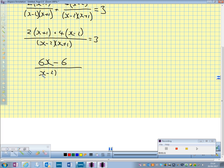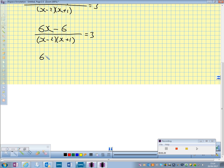x minus 2, x plus 1 equals 3. Next step is to multiply through by our bottom line. So we have 6x minus 6 equals 3 upon x minus 2 upon x plus 1.